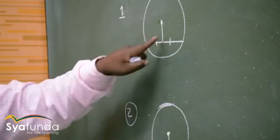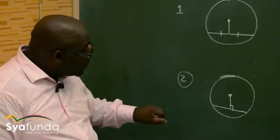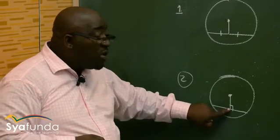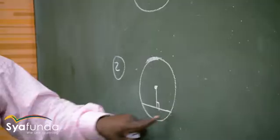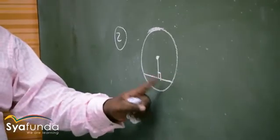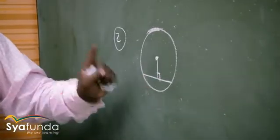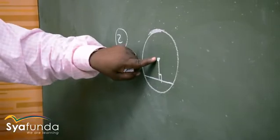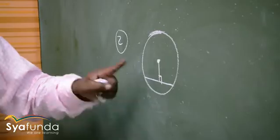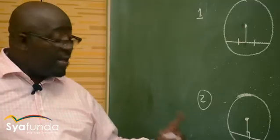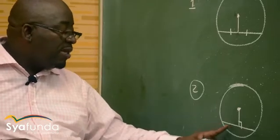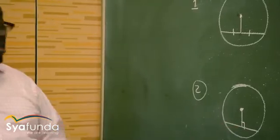Is this line really perpendicular to a chord? Number two: a line drawn from the center of a circle, perpendicular to a chord, bisects the chord. In this case, we are given that this is 90 degrees, and we are proving whether this side is the same as this side — that it bisects the chord into equal halves.